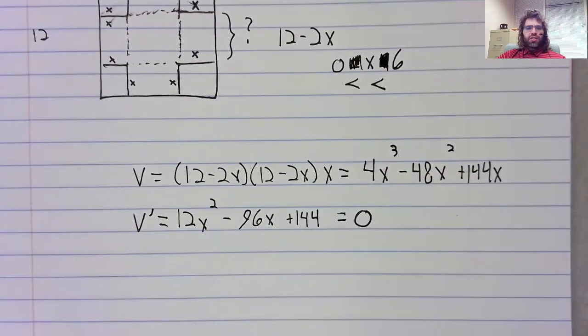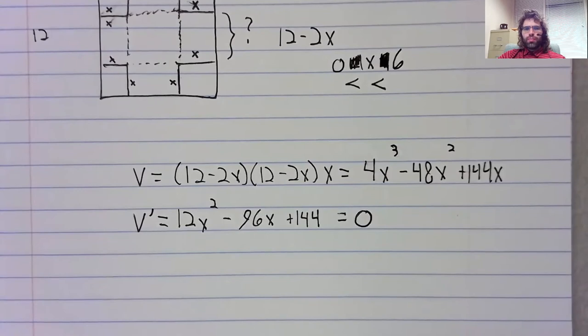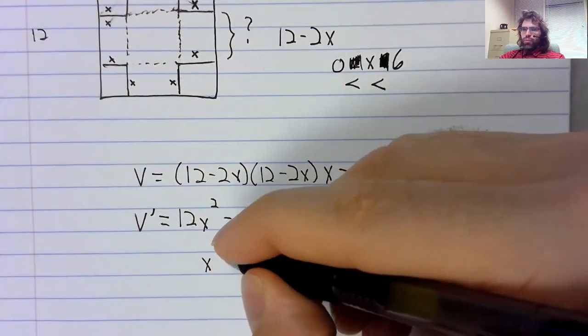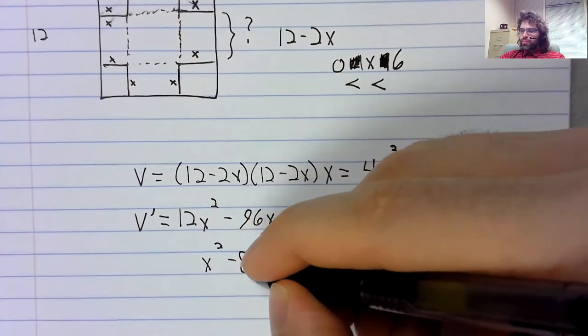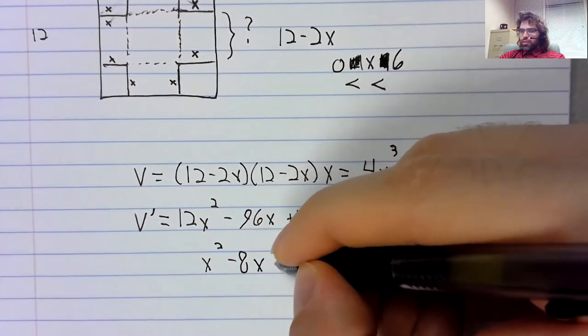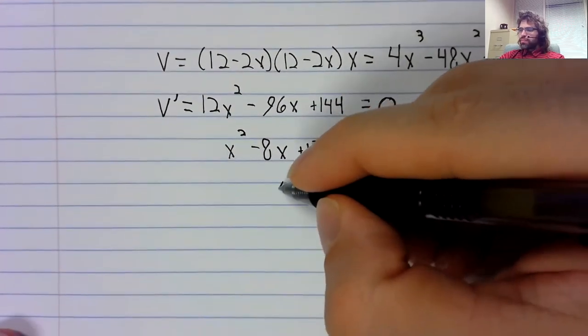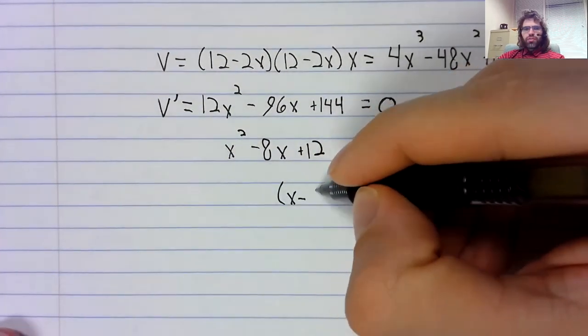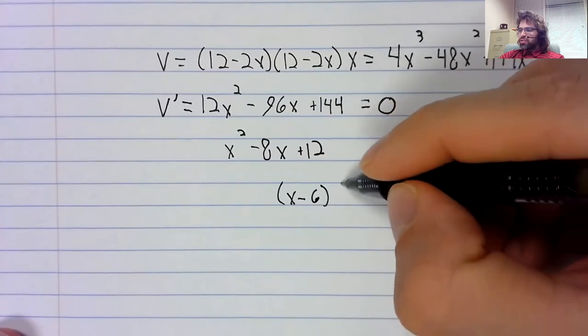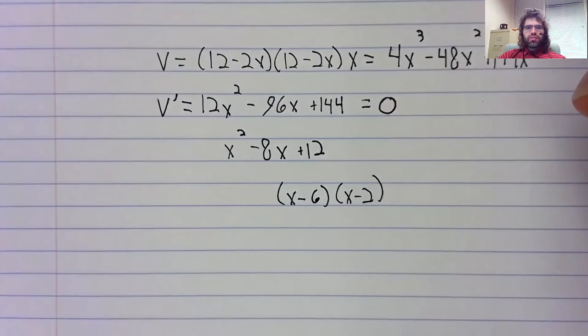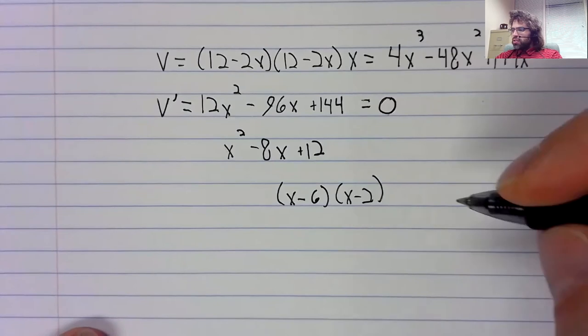We set this equal to zero. We can divide through by 12. We get x minus 6 times x minus 2.